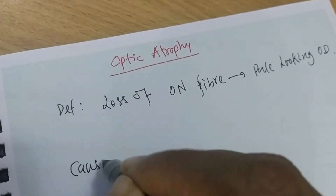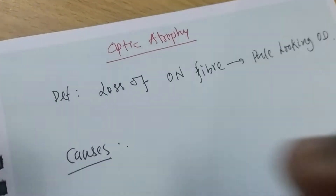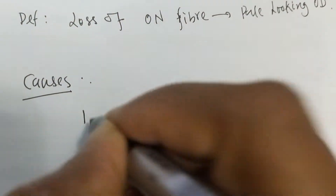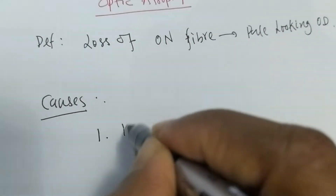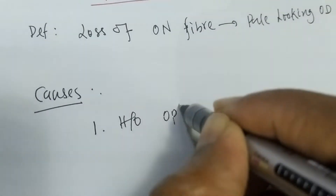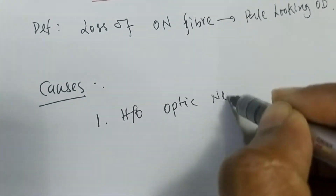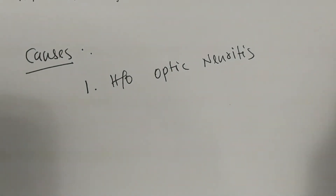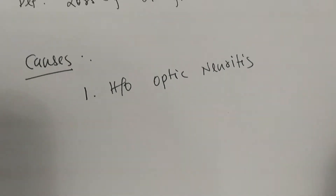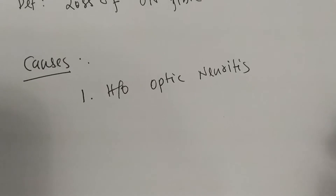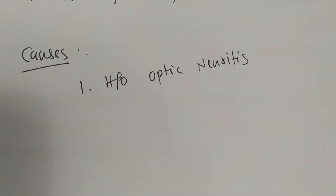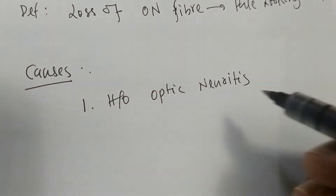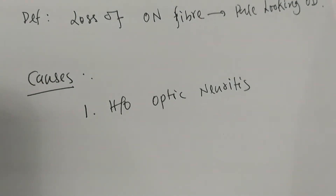There are so many causes of optic atrophy. Cause number one: history of optic neuritis, that is inflammation of the optic nerve. This causes chronic demyelination of the optic nerve, leading to gradual loss of optic nerve fiber.